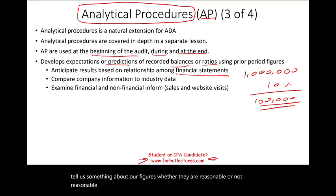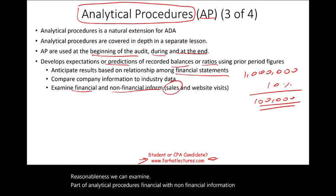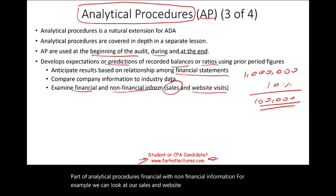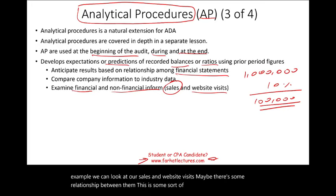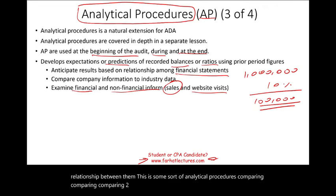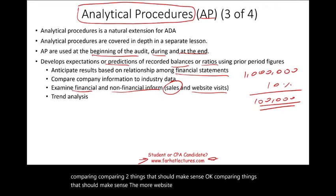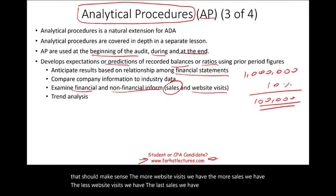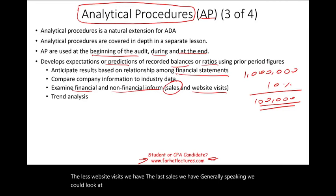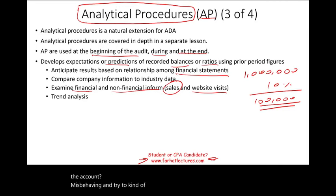Analytical procedures can also examine financial with non-financial information. For example, we can look at sales and website visits — if there's a relationship between them, more website visits generally means more sales. We can also do trend analysis: looking over time at how an account is behaving to draw a conclusion or make a judgment. APs are best used when there's plausibility and predictability in the relationship, such as the relationship between debt and interest expense, or sales and accounts receivable.